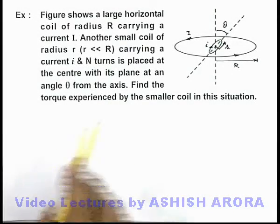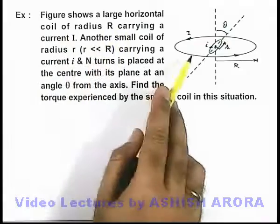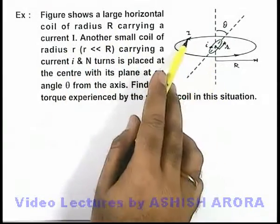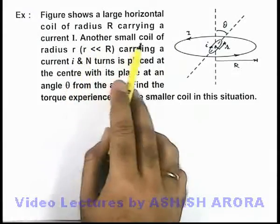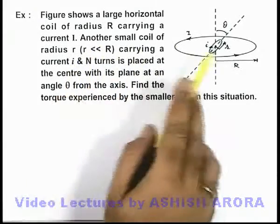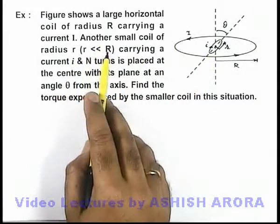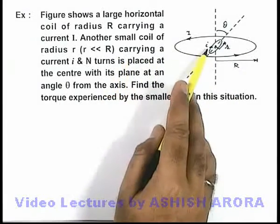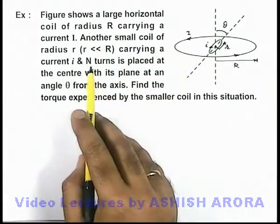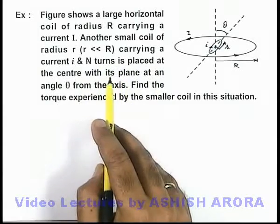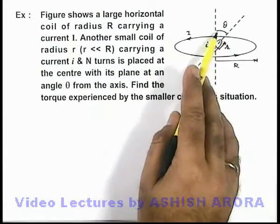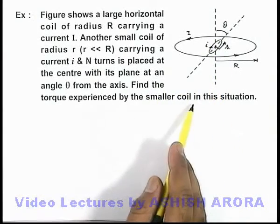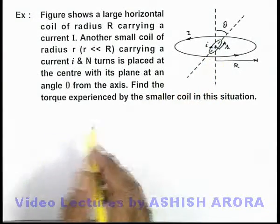In this example, the figure shows a large horizontal coil of radius R carrying a current I, and another small coil of radius r, which is very small compared to the radius of the larger coil. The small coil carries a current i and has a total of n turns, and is placed at the center with its plane at an angle theta from the axis of the larger coil. We are required to find the torque experienced by the smaller coil.